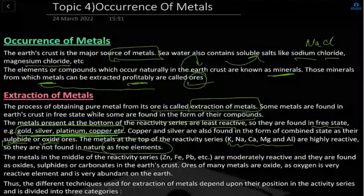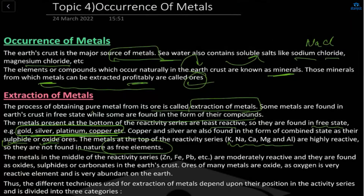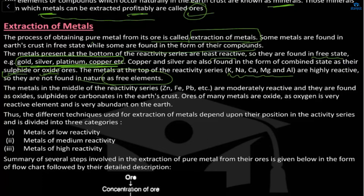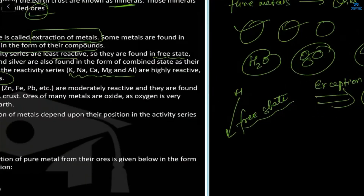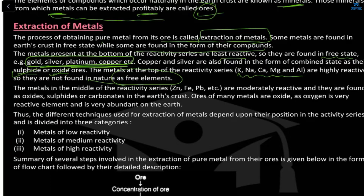To summarize the occurrence of metals: metals come from the earth's crust; salts like NaCl and MgCl2 are found in seawater. A single element or compound occurring naturally is a mineral; minerals from which metals can be extracted are ores. Below hydrogen all metals are in free state except copper and silver, which are always present as sulfide or oxide compounds.